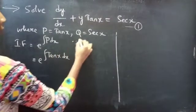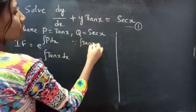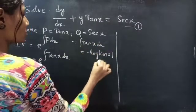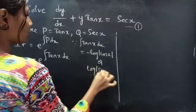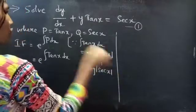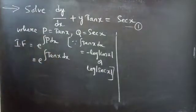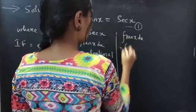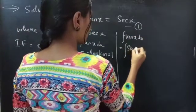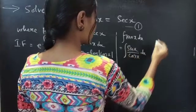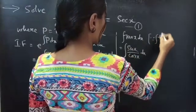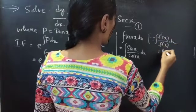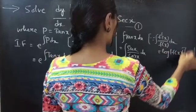Since we know that ∫tan(x) dx = −log|cos(x)| = log|sec(x)|. What happens if we forget the formula for ∫tan(x) dx? Simply consider tan(x) dx. We know that tan(x) = sin(x)/cos(x). Consider the formula: ∫f'(x)/f(x) dx = log|f(x)|.